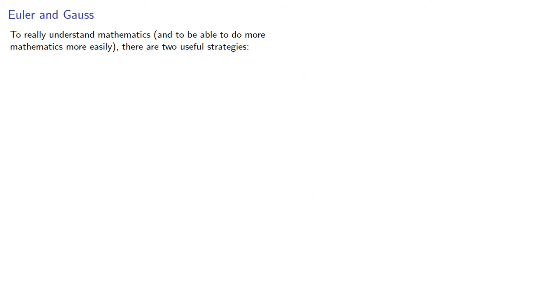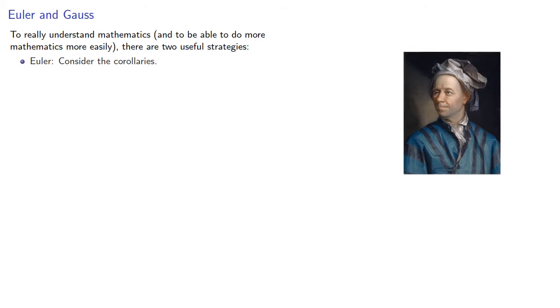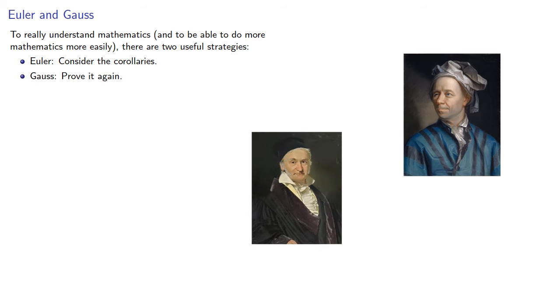Now at this point, we'll introduce the following idea. To really understand mathematics, and to be able to do more mathematics more easily, there are two useful strategies. There's the strategy of Leonard Euler, consider the corollaries. And there's the strategy of Carl Friedrich Gauss, prove it again.